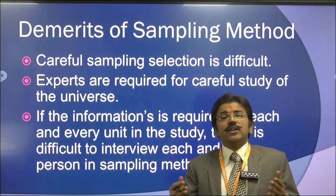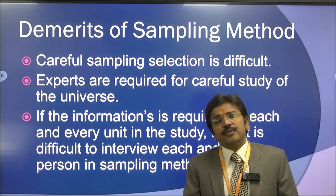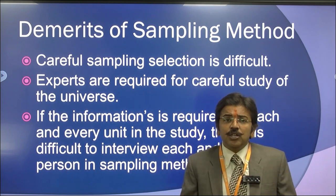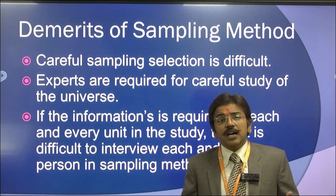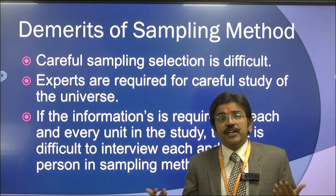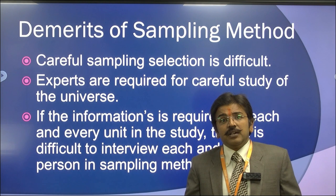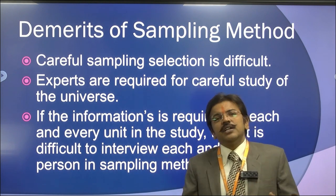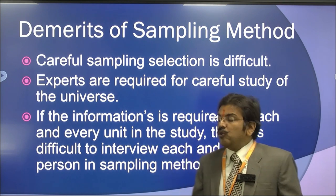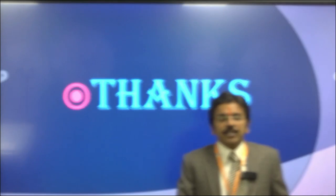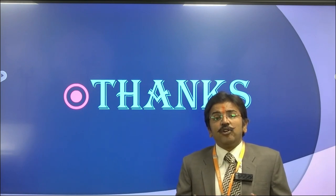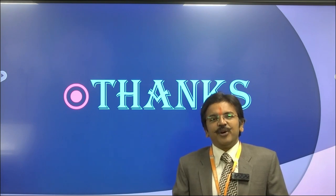For census, you use an interview method with a schedule, while for sampling you can use questionnaire, schedule, or interview. Sampling is a faster and less costly method, while census is costlier and more time-consuming. As you know, the Government of India conducts a census every 10 years. For scientific, social science, humanities, and education studies, we use the sampling method because it is best suited for researchers. I hope you have understood census and sampling — this is the second part of statistical investigation. Please visit the first part to understand what statistical investigation is.